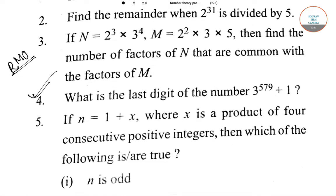What is the last digit of the number 3 to the power 579 plus 1? This is a question of remainder theorem, and from remainder theorem, we have seen that we get to find the value of the last digit also. So here, 3 to the power 579 is our number.